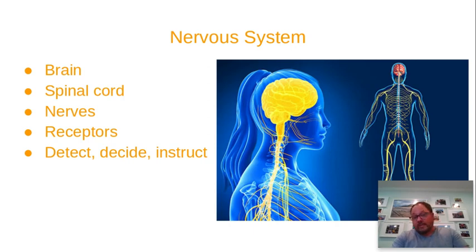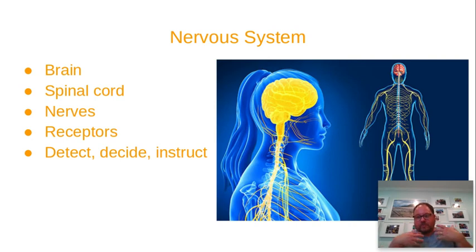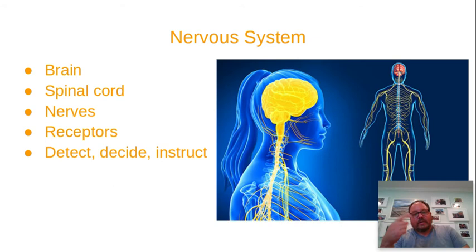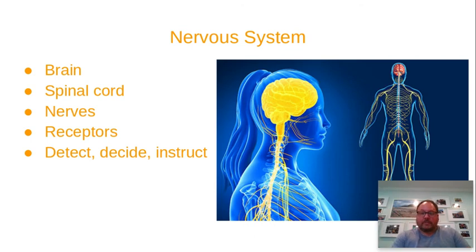Your nervous system consists of your brain and spinal cord, and then the nerves running around the body. What they do is detect what's occurring inside and outside the body, send those messages to the brain and spinal cord where decisions get made on how to respond, and then electrical instructions are sent out to muscles and glands so your body can act.